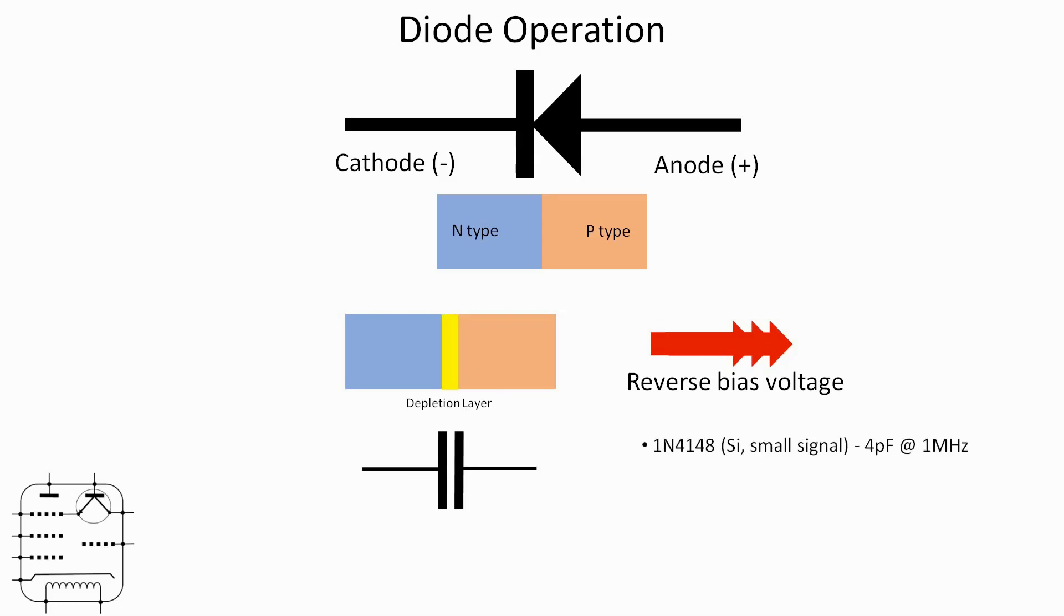The 1N4148, which is the very common silicon small signal diode, has got 4 pF of capacitance measured at 1 MHz and the 1N4007, which is a well known silicon rectification diode, has about 8 pF at 1 MHz.